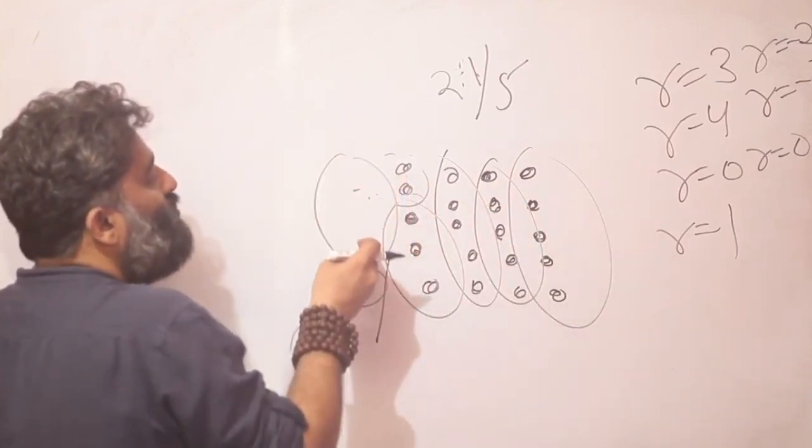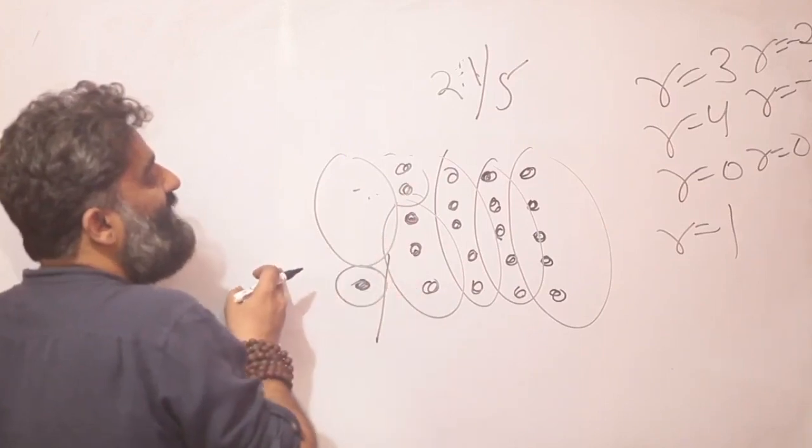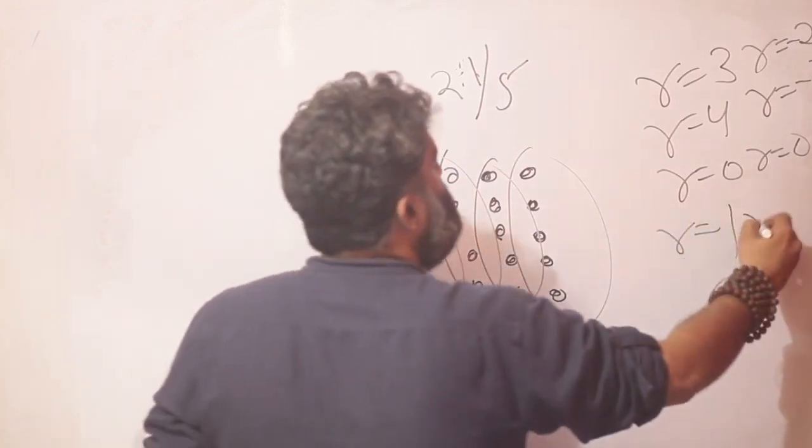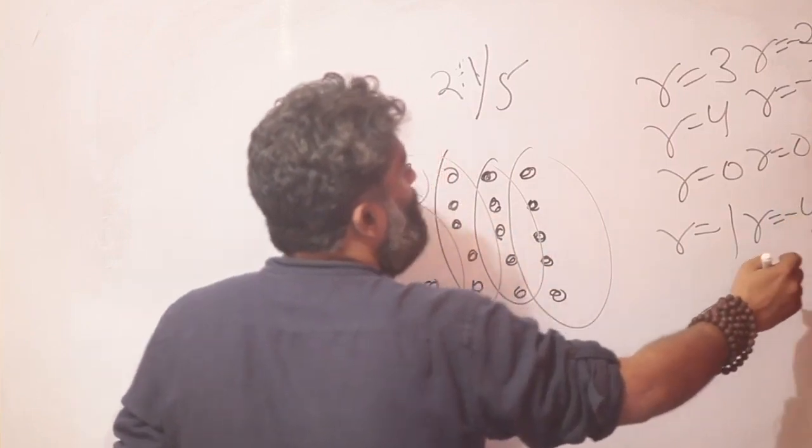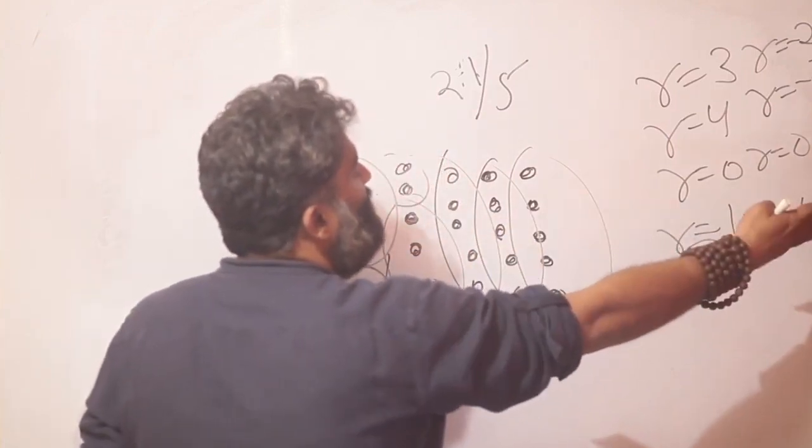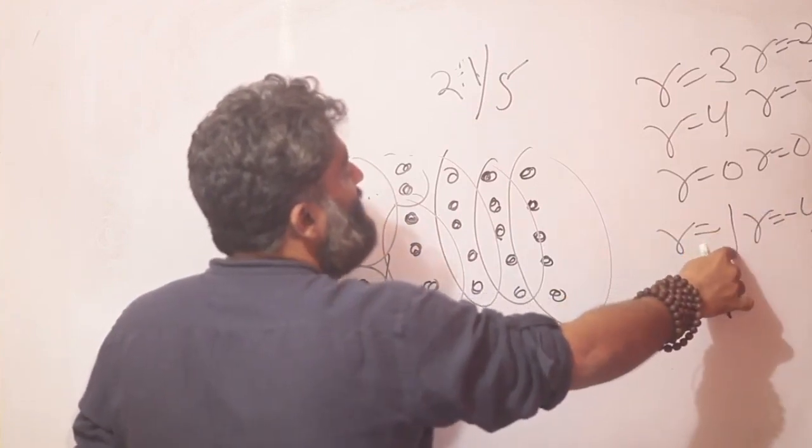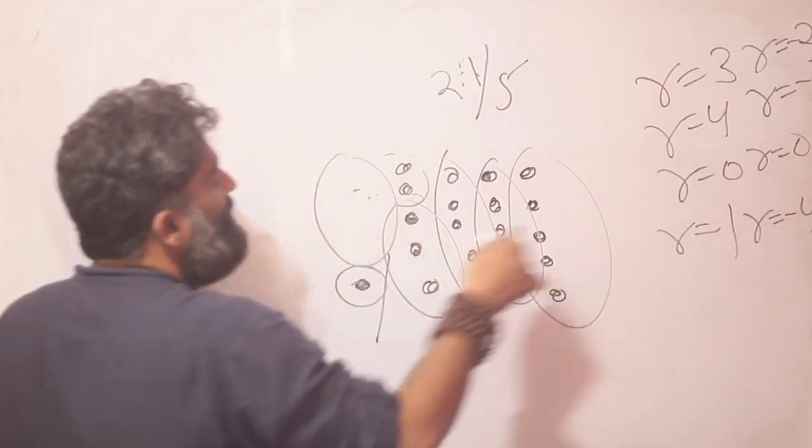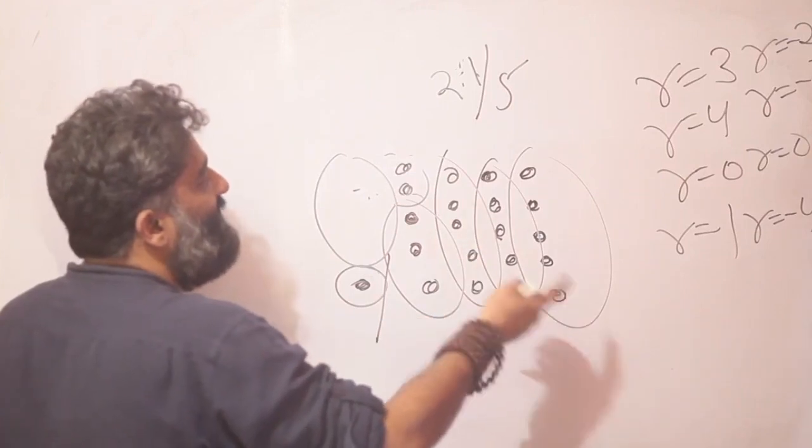If I add 4 more toffees, I will reach 25 which is the next multiple of 5. So I can also say the remainder is minus 4. That means my number is 4 short of a multiple of 5.